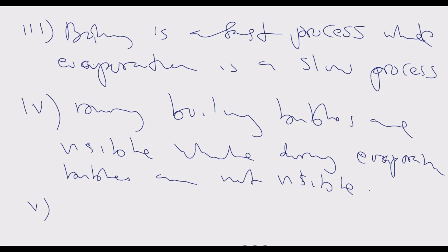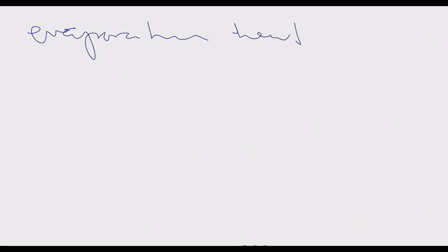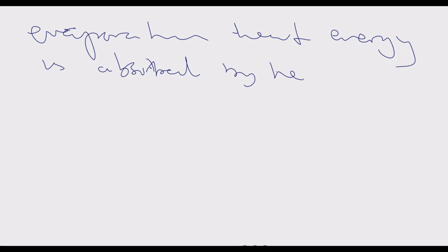Number five: during boiling, heat energy is supplied to the substance by an external energy source — for example, a stove supplies heat energy to the pot. During evaporation, heat energy is absorbed by the substance from the surrounding environment.